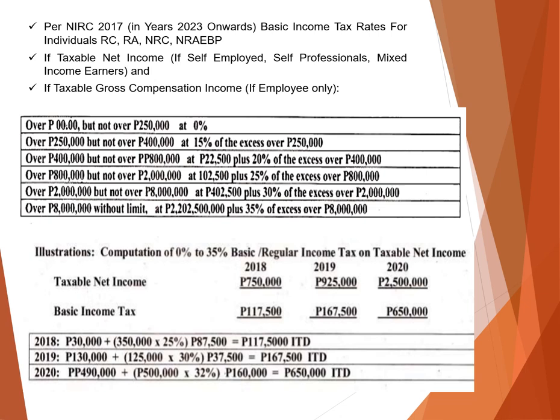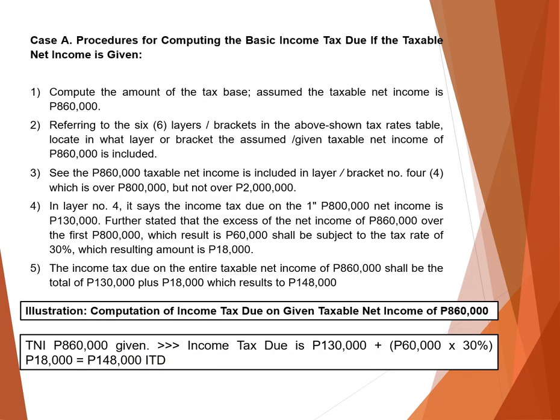Under the NIRC 2017, for year 2023 onwards, this is the new tax table that will be used. Case A: income tax due if taxable net income is given. This is straightforward since the taxable net income is already given.